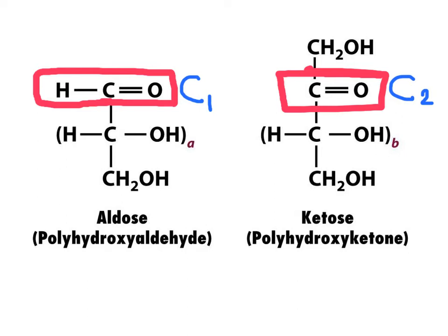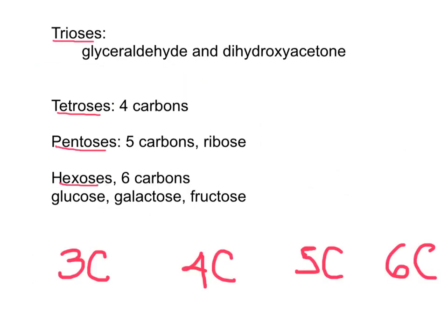For an aldose, carbon number one is always the aldehyde group. For the ketose, the carbonyl group is always carbon number two. There are many carbohydrates with six and five carbons, but for our class, we only need to memorize the structures of glyceraldehyde, dihydroxyacetone, ribose, glucose, galactose, and fructose.